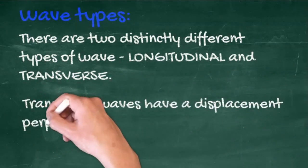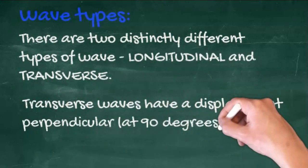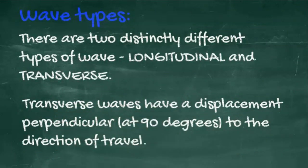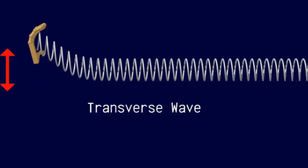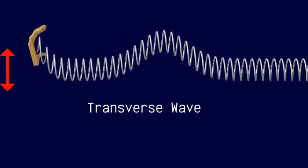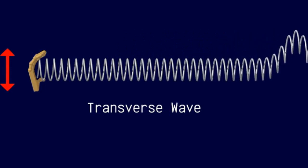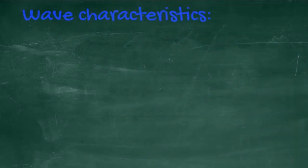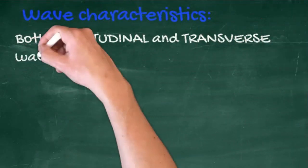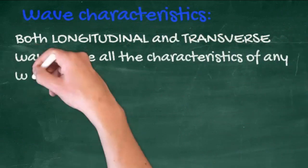Transverse waves have a displacement perpendicular — that's at 90 degrees — to the direction of the wave. Both longitudinal and transverse waves have all the characteristics of any wave.